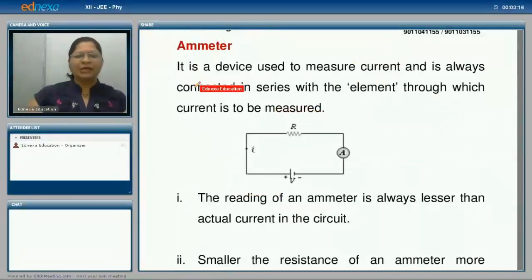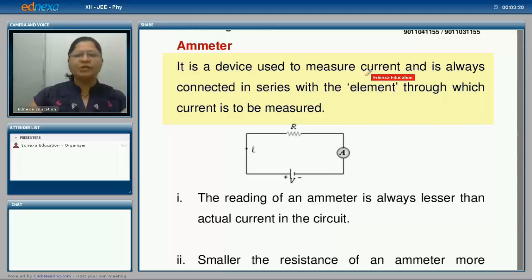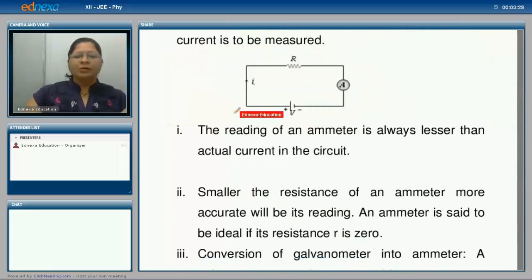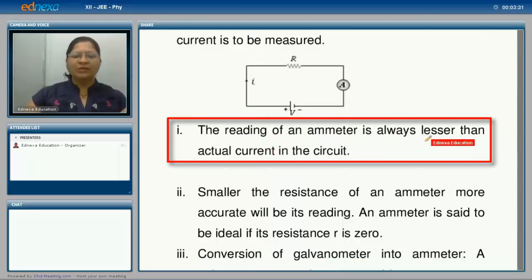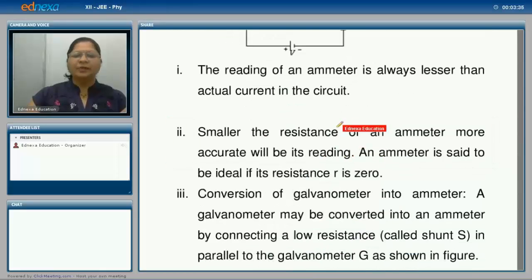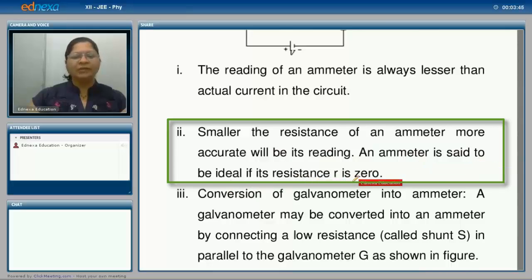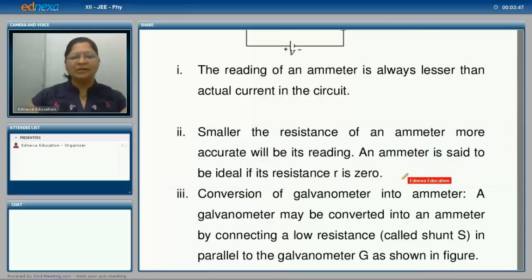An ammeter is a device used to measure current and is always connected in series with the element through which current is to be measured. The reading of an ammeter is always lesser than the actual current in the circuit. Smaller the resistance of an ammeter, more accurate will be its reading. An ammeter is said to be ideal if its resistance R is zero.